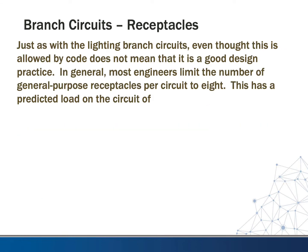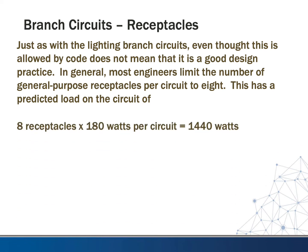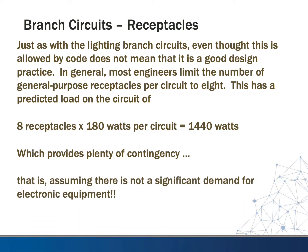Just as with lighting branch circuits, even though 13 outlets is allowed by code, it does not mean it is good design practice. In general, most engineers limit the number of general purpose receptacles per circuit to a maximum of 8, giving a predicted load of 8 times 180 watts, or a little over 1,400 watts on the circuit. This provides plenty of contingency if someone were to plug something bigger in — assuming there's not a significant demand for electronic equipment.